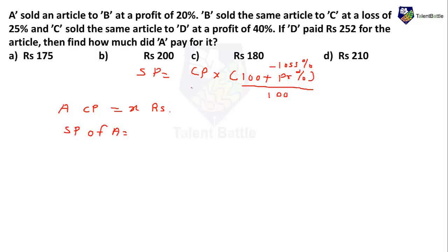Selling price of A = Cost price of A × (120/100) = X × (120/100). Now, the selling price of A is the cost price of B, because B purchased at this value. Now that I know the cost price of B, I can calculate the selling price of B.